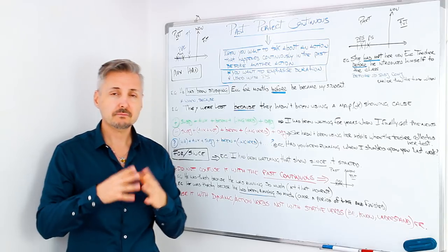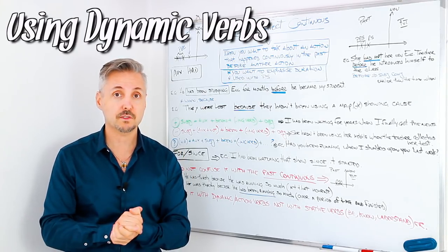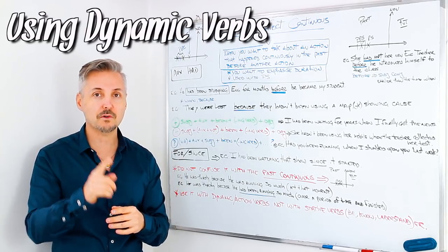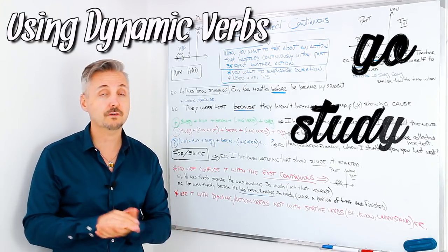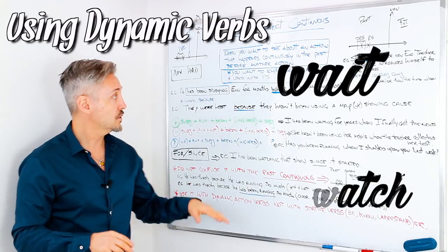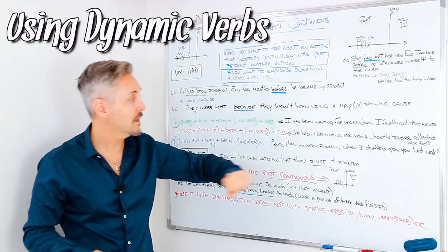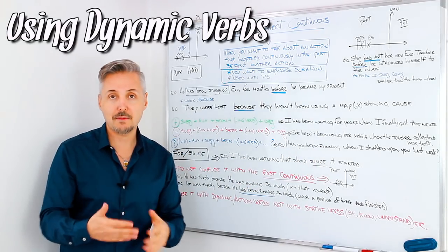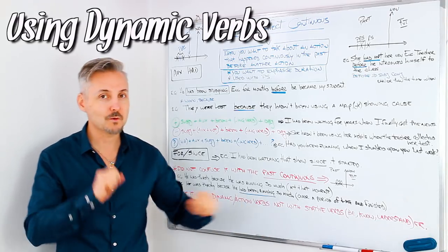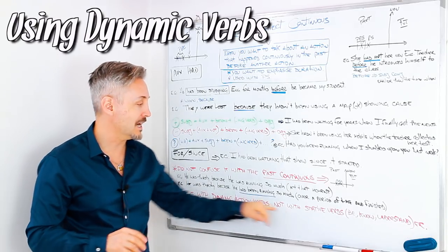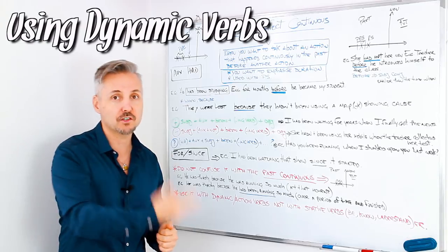Remember that with the Past Perfect Continuous we use dynamic verbs, not stative verbs. Dynamic verbs are action verbs like 'go', 'study', 'watch', 'wait', 'run' — you can see we use all of those in our examples. We never use it with stative verbs, unless there are some exceptions, which you can watch in the video I prepared on dynamic and stative verbs. Never use it with verbs like 'know' or 'understand' — you cannot say 'I had been knowing' or 'I had been understanding.'